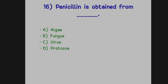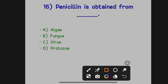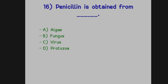Penicillin is obtained from dash. Option A: Algae. Option B: Fungus. Option C: Virus. Option D: Protozoa. The correct answer is fungus — penicillin is obtained from fungus.